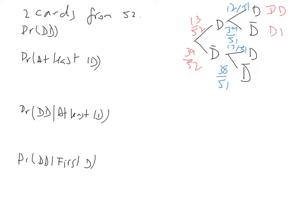So we're looking at D and D, which is 13 out of 52 times 12 out of 51, and that ends up being 1 out of 17.